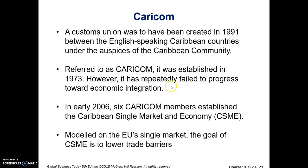Before we get to CARICOM, some information about the Andean Pact and Mercosur from the textbook. The Andean Pact involves Bolivia, Chile, Ecuador, Colombia, and Peru. It was generally not successful and was relaunched in 1990 as a customs union — now called the Andean Community. It's important to know that the Andean Pact or Andean Community is a customs union. They signed an agreement with Mercosur in 2003 to create a free trade area.